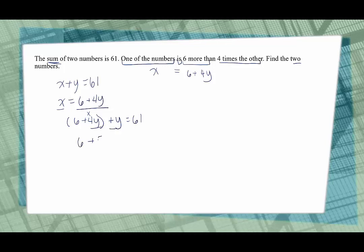Now we can combine our like terms. We have six plus five y is equal to 61, and now we want to get y by itself so we'll subtract six from both sides. We get five y is equal to 55. Divide both sides by five and we figure out one mystery number is 11.